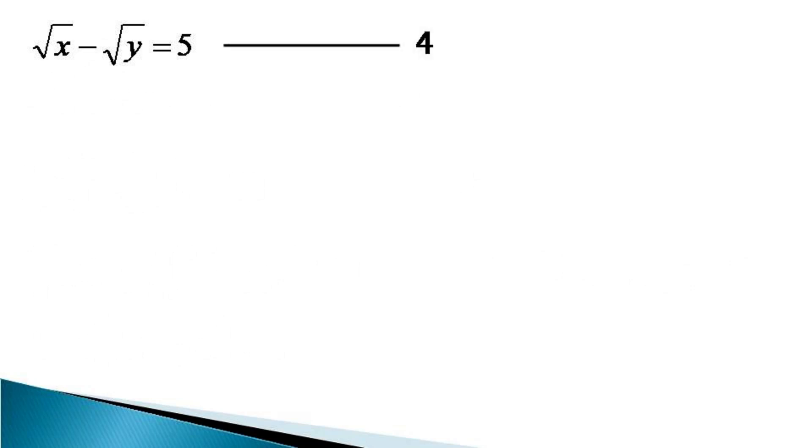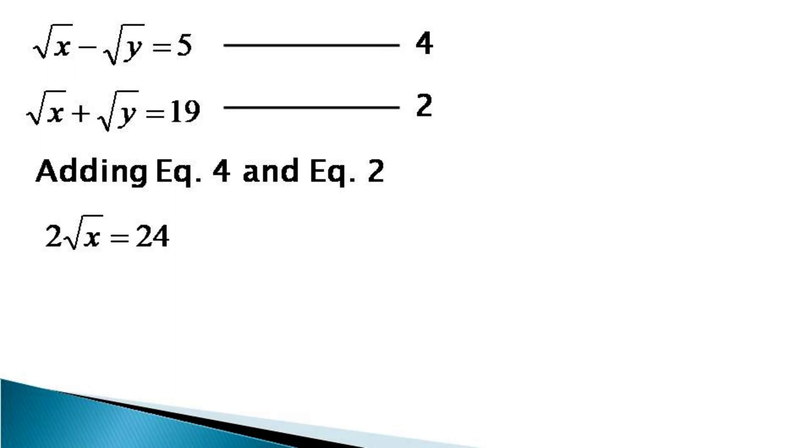Then we recall equation 2 which is root X plus root Y is equal to 19 and we add both these two equations. Adding these two equations, root Y terms get cancelled and we get 2 root X is equal to 24 which gives us root X is equal to 12 after dividing by 2 on both the sides. And now squaring both the sides, we get X is equal to 144.